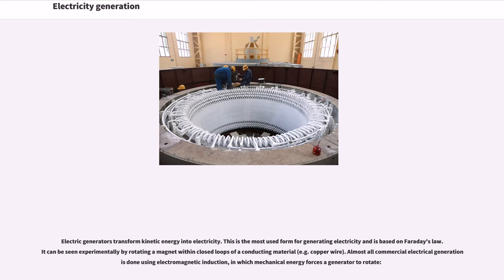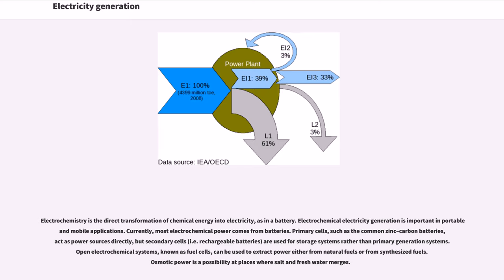Electric generators transform kinetic energy into electricity. This is the most used form for generating electricity and is based on Faraday's law. It can be seen experimentally by rotating a magnet within closed loops of a conducting material, for example copper wire. Almost all commercial electrical generation is done using electromagnetic induction, in which mechanical energy forces a generator to rotate. Electrochemistry is the direct transformation of chemical energy into electricity, as in a battery, and is important in portable and mobile applications. Most electrochemical power comes from batteries. Primary cells, such as the common zinc-carbon batteries, act as power sources directly, but secondary cells, i.e. rechargeable batteries, are used for storage systems rather than primary generation systems. Open electrochemical systems, known as fuel cells, can be used to extract power either from natural fuels or from synthesized fuels. Osmotic power is a possibility at places where salt and fresh water merge.